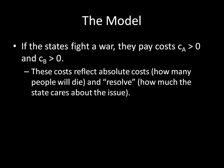But if the states fight a war, they're going to pay costs, represented by CA and CB, and those costs have to be greater than zero — there's some substantive loss that the states incur by fighting. Now, these costs reflect two things: the absolute costs of war, like how many people would die, how many buildings will be destroyed, how much money you spend on your military; but it also incorporates resolve, or how much states care about the issue. For example, if Mexico and the United States were bargaining over Minnesota...